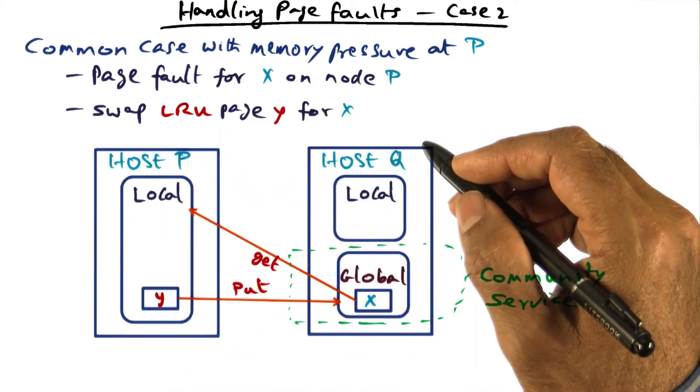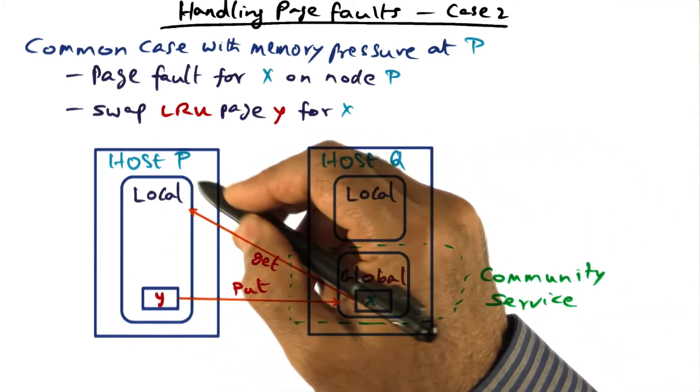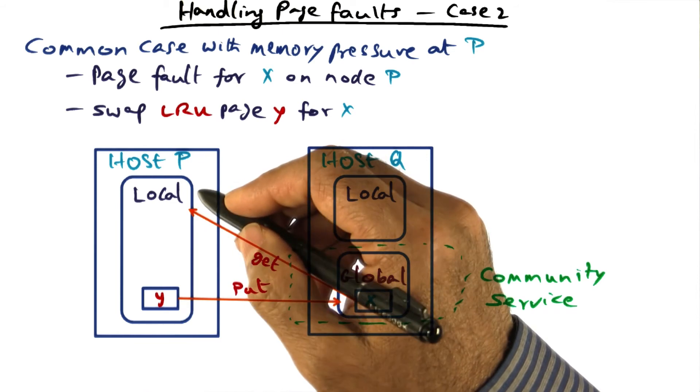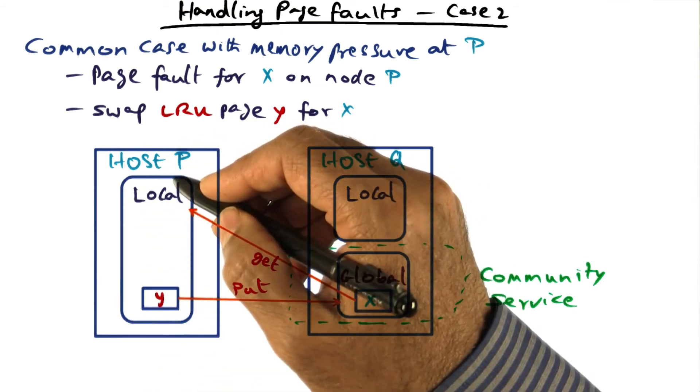So in this case, you can see that there is no change in the distribution of local and global on P, because global is already zero. It cannot go anything less than that. So the distribution remains unchanged.